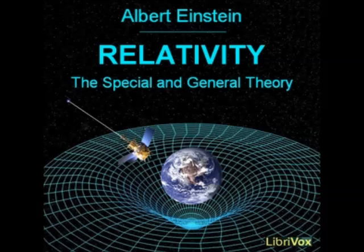We are now in a position to replace the provisional formulation of the general principle of relativity, given in section 18, by an exact formulation. The form there used — 'all bodies of reference K, K', etc., are equivalent for the description of natural phenomena, or formulation of the general laws of nature, whatever may be their state of motion' — cannot be maintained, because the use of rigid reference bodies, in the sense of the method followed in the special theory of relativity, is in general not possible in space-time description. The Gauss coordinate system has to take the place of the body of reference.